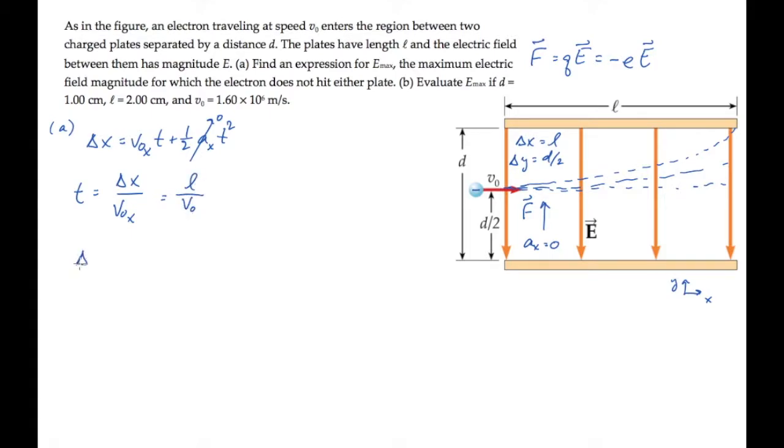Now we can look in the vertical direction, where the acceleration is again constant. So we can write down this kinematic equation and zero out v0y, because the initial velocity is in the x direction. We know the time t in this expression, but we need to find the acceleration ay.